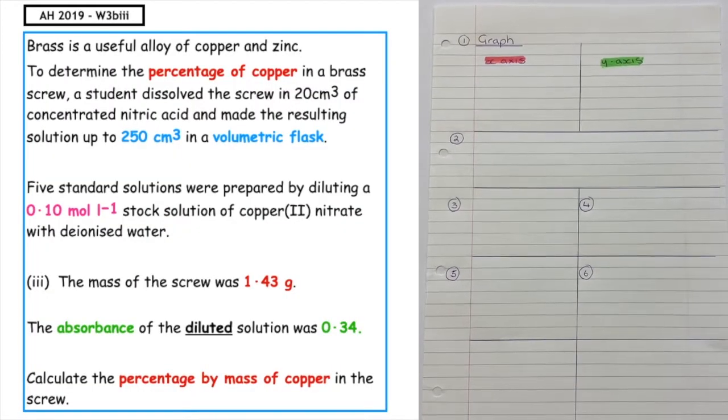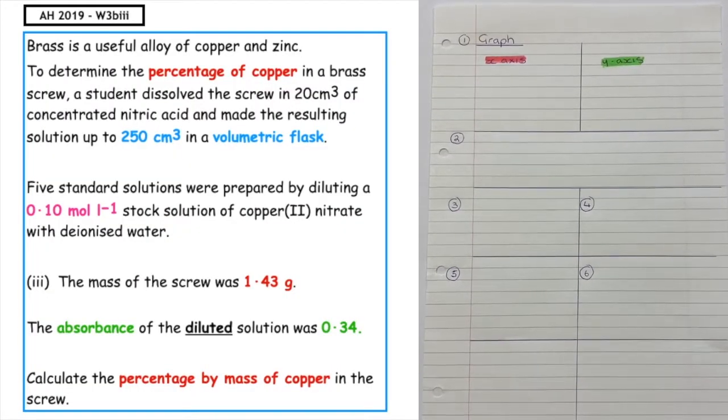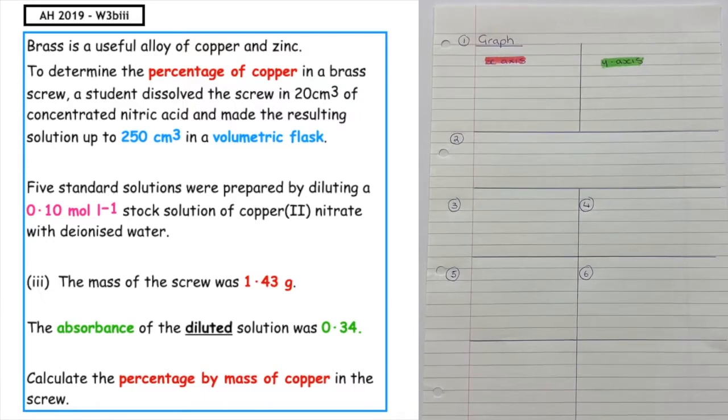This past paper question is from the Advanced Hire 2019 written 3b. If we read what the question actually wants us to do, which is at the bottom of the question, it asks us to calculate the percentage by mass of copper in the screw.